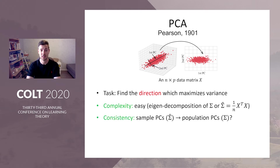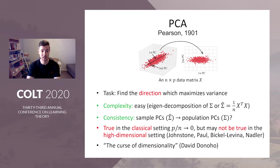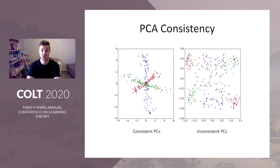One concern is consistency. We want the sample PCs, the ones computed from the data, to be consistent or to converge to the latent population PCs. While under mild assumptions this is true in the classical setting, where the number of features p is much smaller than the number of samples n, this may not be the case in the high-dimensional setting, and this phenomenon is also known as the curse of dimensionality.